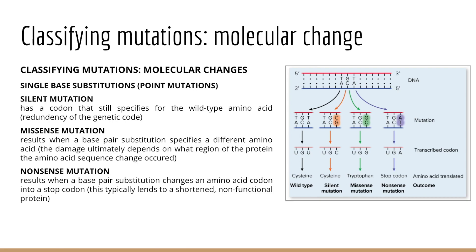When we talk about these single base mutations, we can use two terms for the replacement of one base with another. We have the idea of transition, which is where we see a pyrimidine replacing a pyrimidine, or a purine replacing a purine. We also have transversion, where we see a purine replaced with a pyrimidine, or a pyrimidine replaced with a purine.